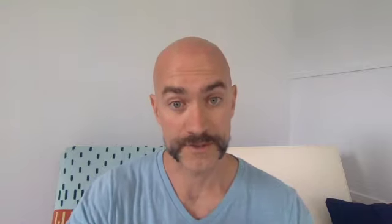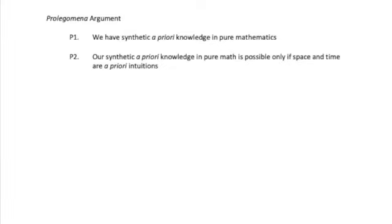That's Kant's thesis. Now let's look at his arguments. Kant distinguishes the analytic method of the Prolegomena from the synthetic method of the Critique by saying that in the Prolegomena he'll rely on mathematics and natural science containing synthetic a priori knowledge, while in the Critique he won't rely on this sort of assumption. The first premise of the Prolegomena's argument is that we have synthetic a priori cognition in pure mathematics. The second premise is that this synthetic a priori cognition is possible only if we have a priori intuitions of space and time. To illustrate, Kant asks us to consider the method of construction in geometrical proofs.